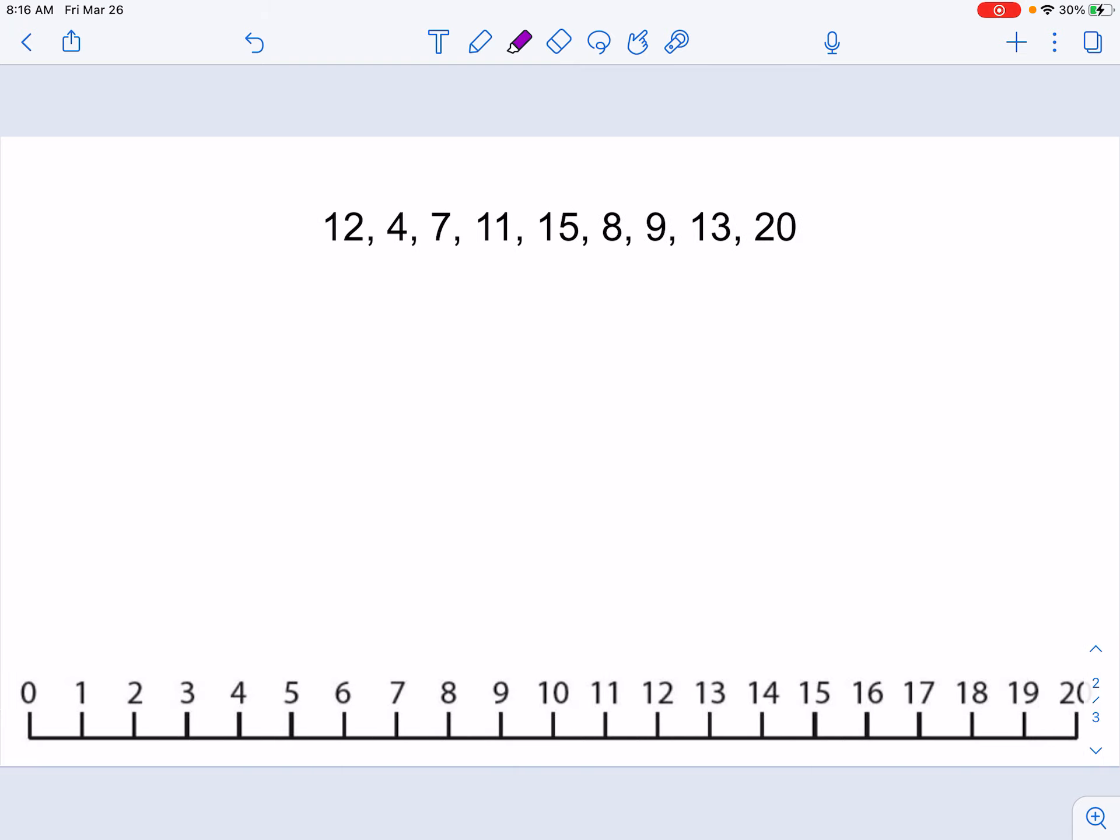So here we have our data. When we're making a box plot, remember we need to find the minimum value, quartile 1, the median, quartile 3, and the maximum value.